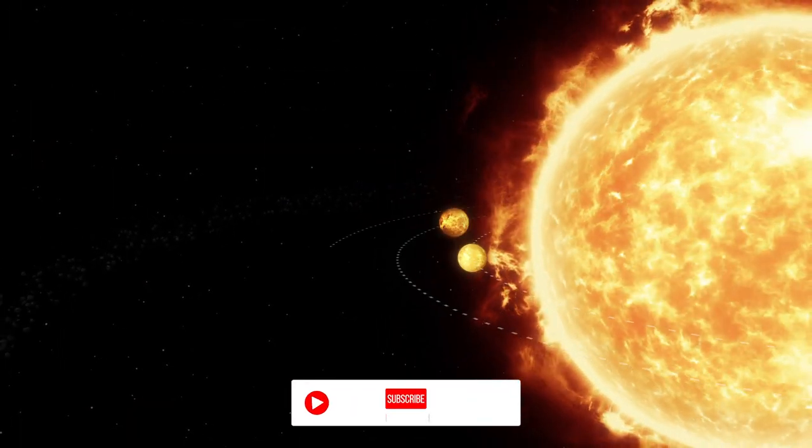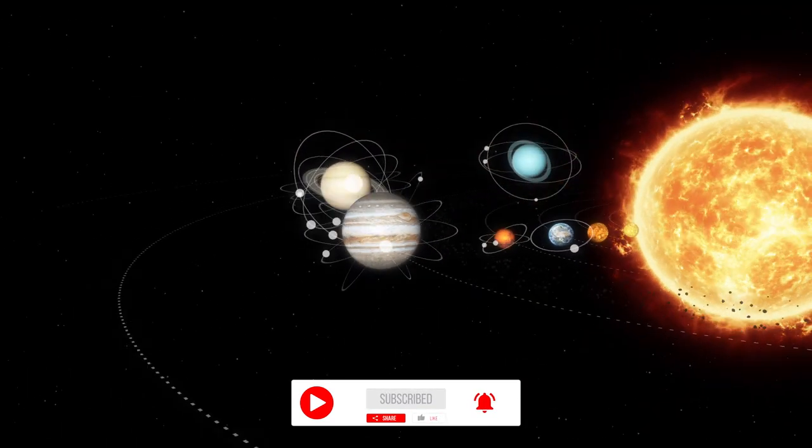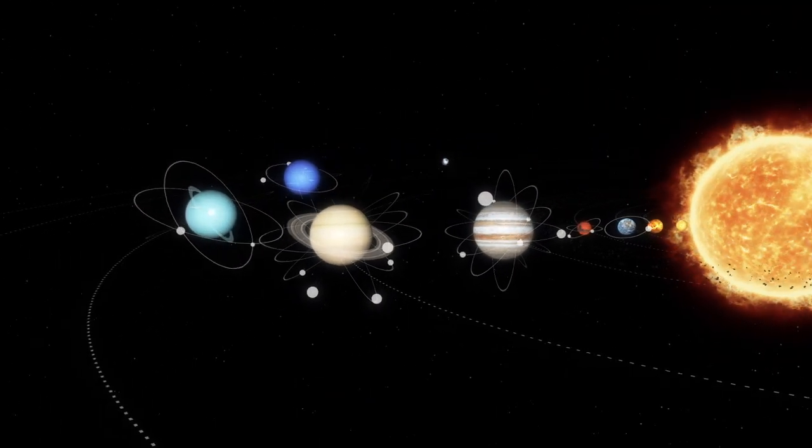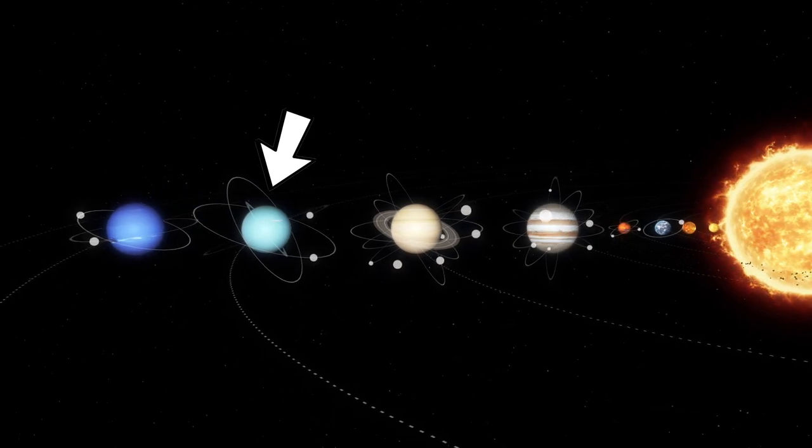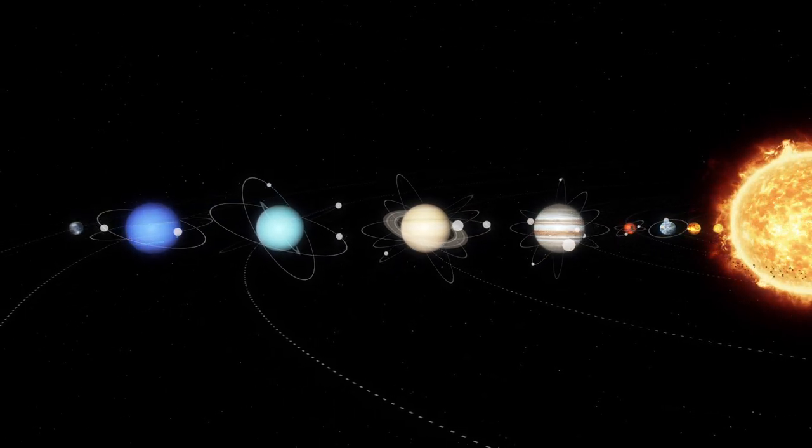If you look closely, you'll see that all of the solar system's planets, except Mercury, are slightly tilted, or in the case of Uranus, very tilted, with respect to their orbital plane around the Sun.